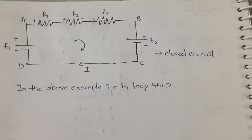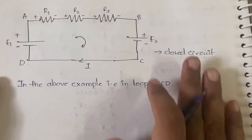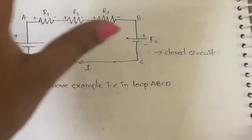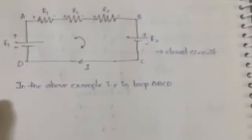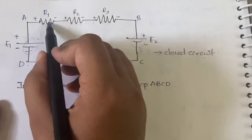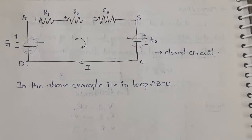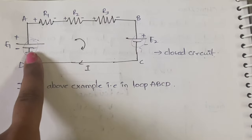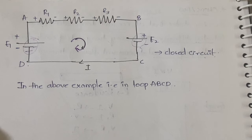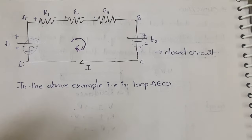In this diagram, this is a closed circuit — it is not open at any point. In this circuit, the elements are: E1 and E2 are batteries, and we have R1, R2, R3 — total five elements. We apply KVL in the direction of current. Current is going in this direction, so KVL is also applied in this direction, as indicated by the arrow marks.